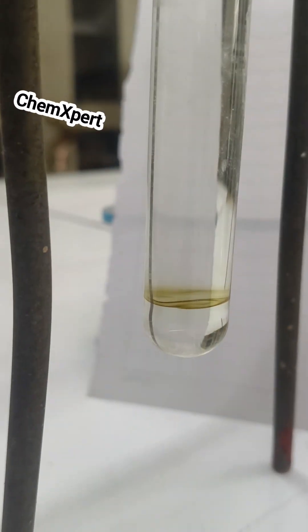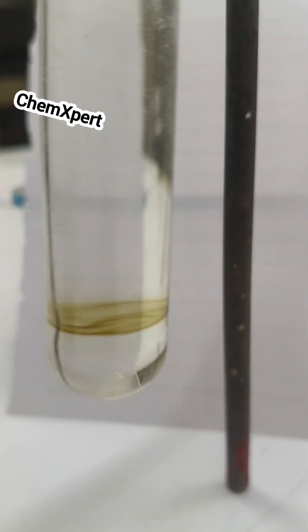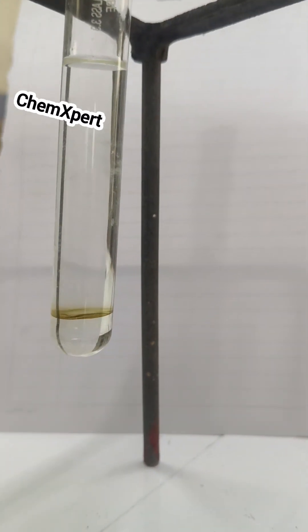A black color ring appears to be floating in the test tube. This is the ring test for the nitrate ion.